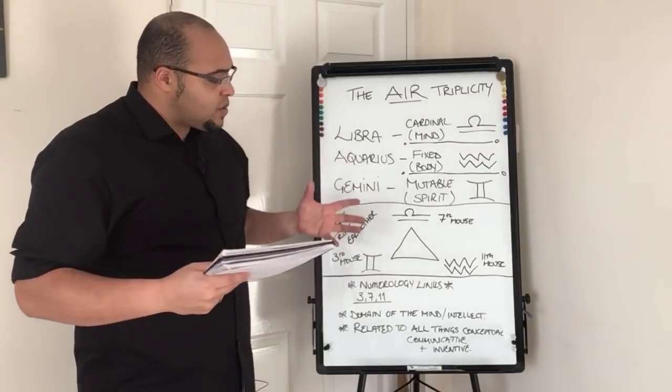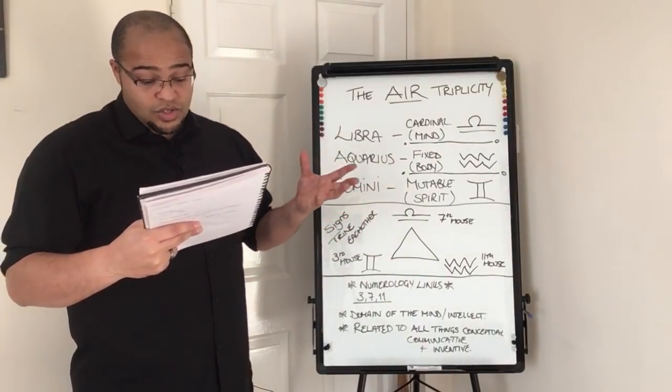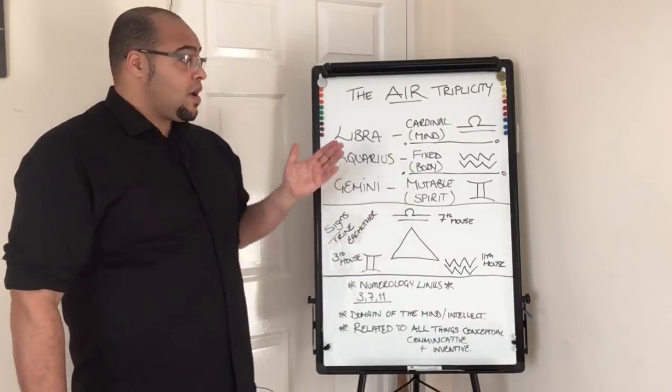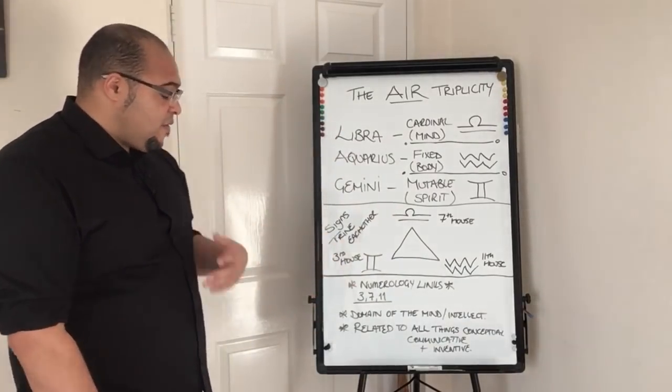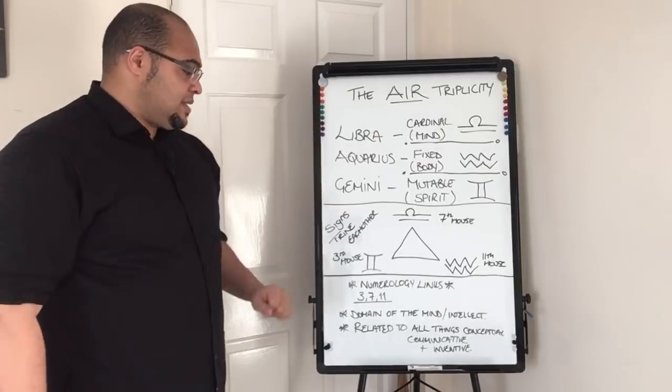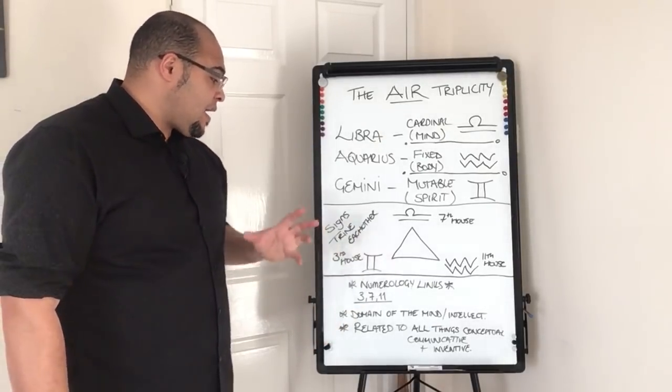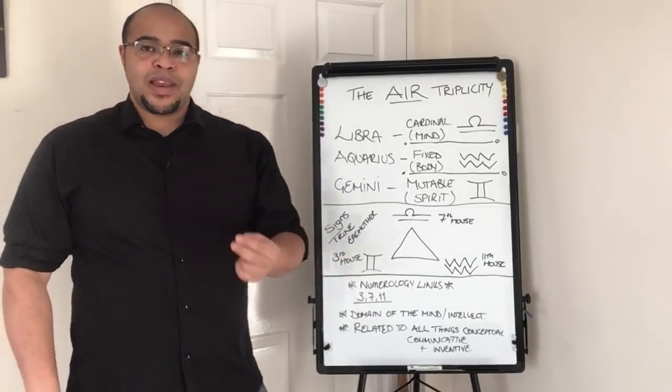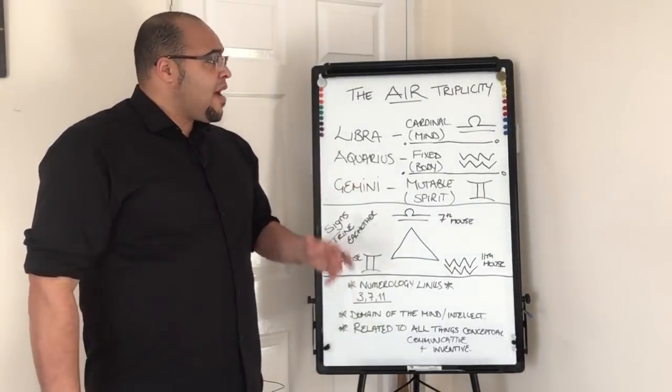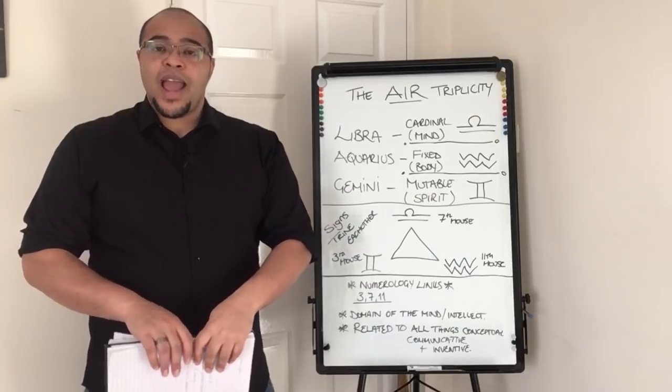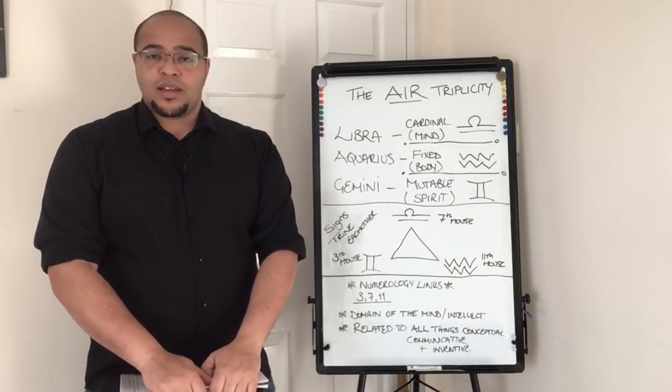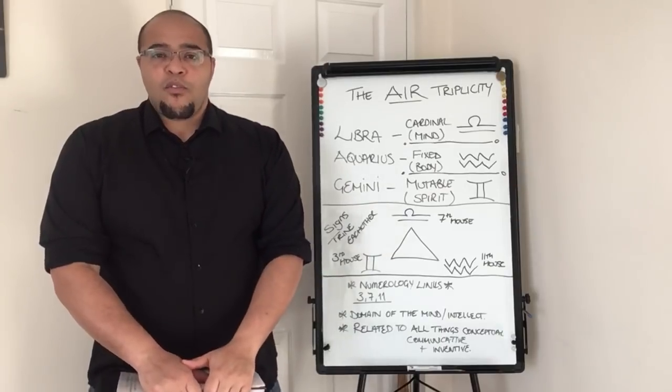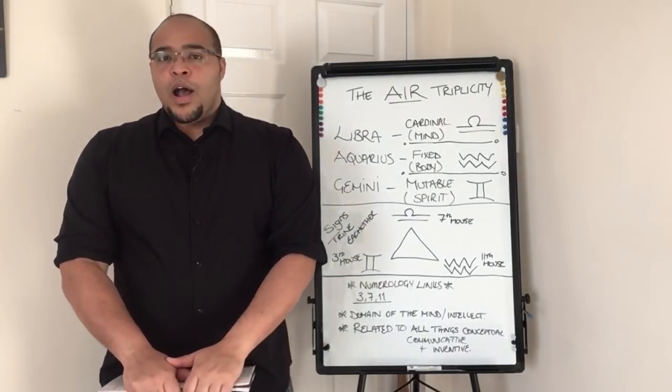And I think this is absolutely fascinating. This is just one small part of astrology. And so therefore I have given you the air triplicity—the domain of the mind and the intellect related to all things conceptual, communicative and inventive. That really is the air triplicity as I realize I'm getting to quite a long video now. So I really hope this has helped you in some way. I hope you found it fun, informative.